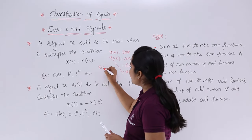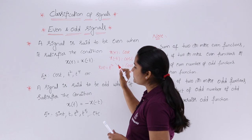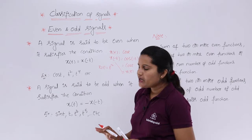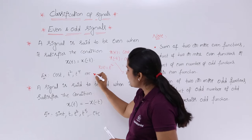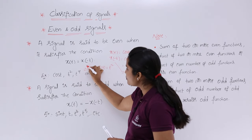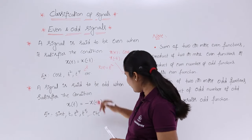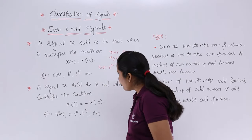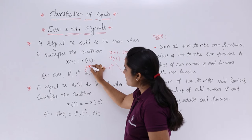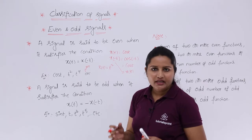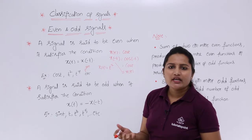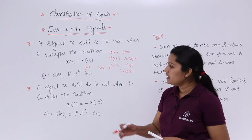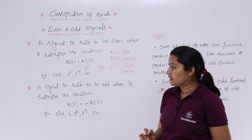For example, if you are having x(t) = t², or any even power. You can consider t^(2n) — t^(2n) indicates an even power. Always 2n, that is 2 times anything, will give an even signal. So t^(2n) indicates that it is an even signal.